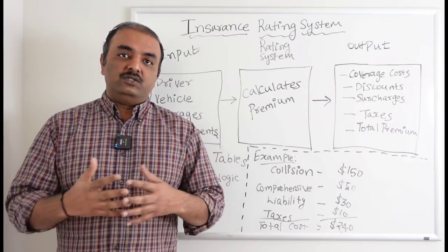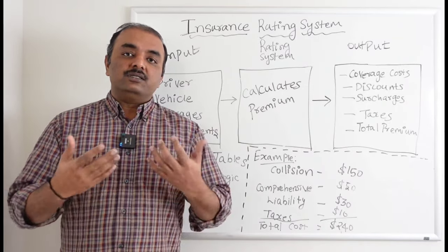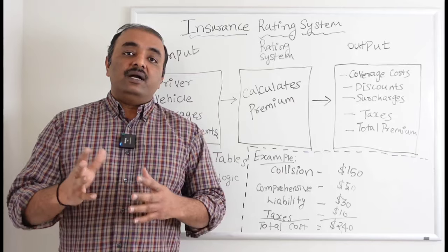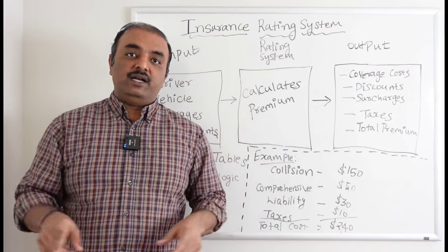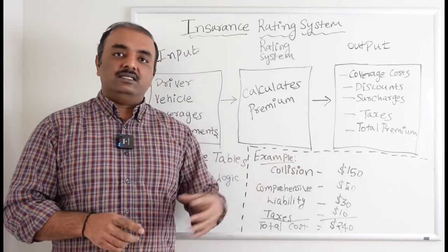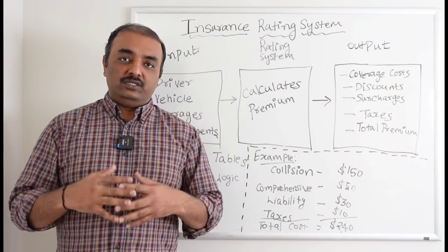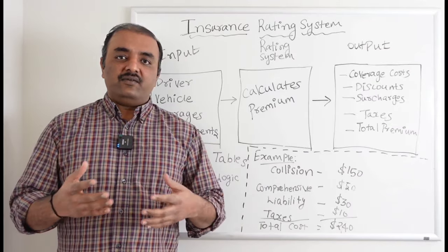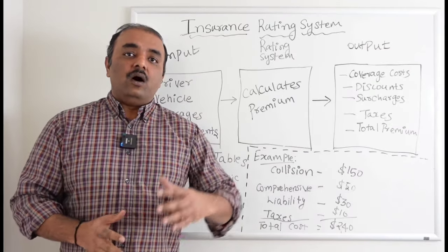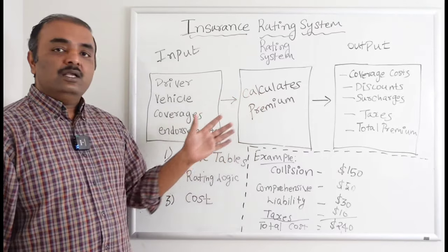If you take discount, say you have a homeowner's policy already with the insurance carrier, now you're getting a personal auto, so they give some kind of bundle discount. That is also going to reflect in your rating sheet, plus surcharges. Every state has a kind of surcharge that has to be collected from the insurance company, plus taxes that we have to pay to the federal government.